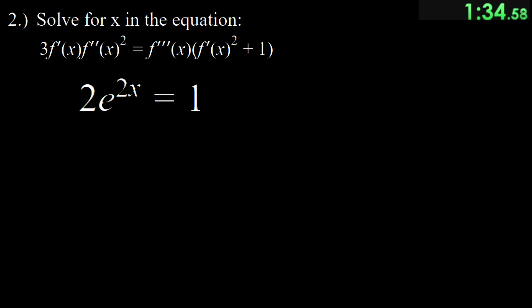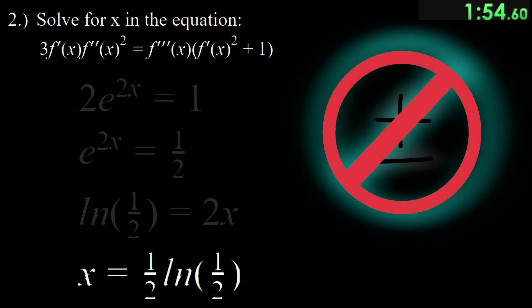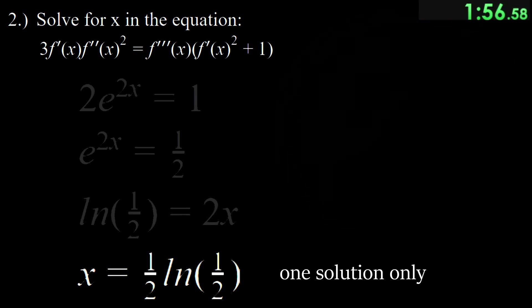Alright, we just need x on the left so we divide 2 first and then we convert this into a natural log expression where it becomes 2x equals ln one half. We divide another 2 so it becomes x equals one half ln one half. And no, no plus minuses, which makes one solution for step 2.